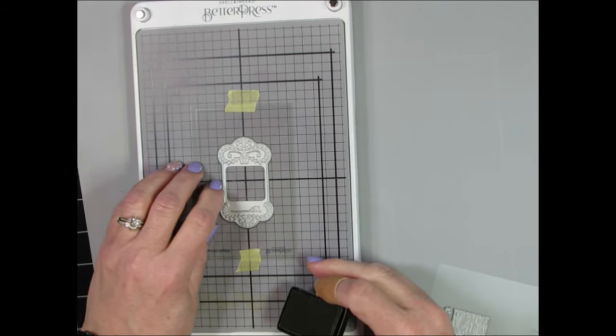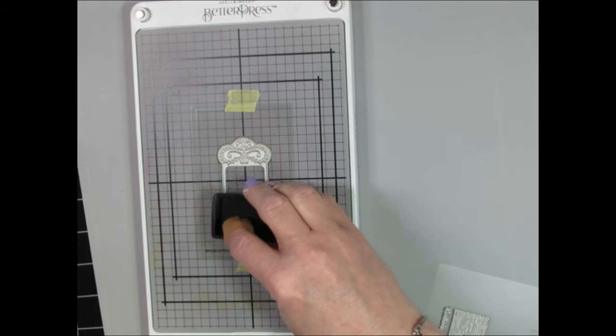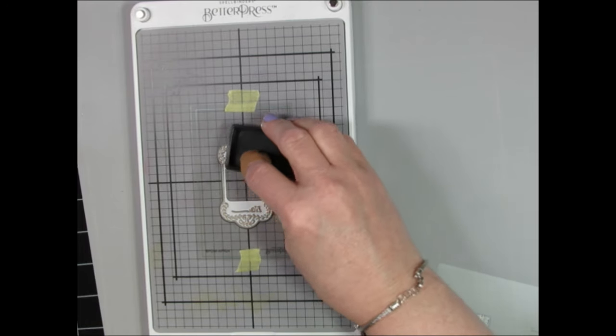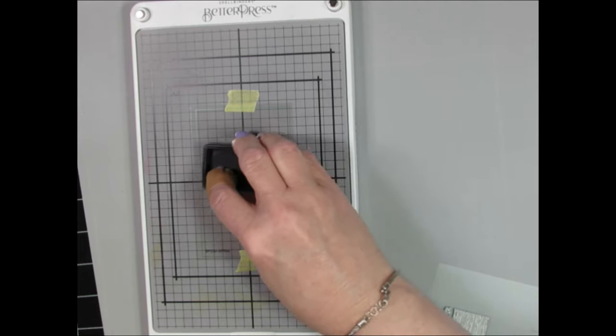When you are creating with Better Press, you are inking your Better Press plate and then running it through your Spellbinders Platinum 6 machine or another manually operating die-cut machine.